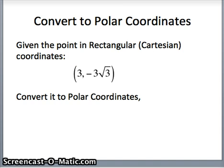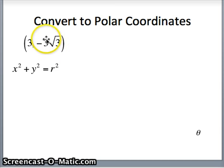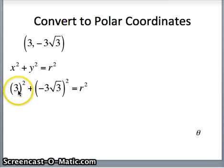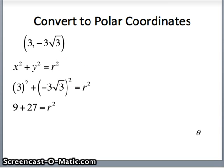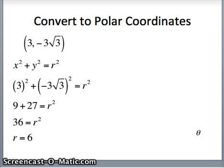Let's look at an example. I am given the point 3 on x, negative 3 root 3 on y. Visualizing this, 3 on x and negative 3 root 3 on y would put us in the fourth quadrant. We want to convert that to polar coordinates. We know x squared plus y squared is r squared. x is 3, so 3 squared is 9. Negative 3 root 3 squared: a negative number squared gives us a positive number, 3 squared is 9, root 3 squared is 3, so 9 times 3 is 27. So 9 plus 27 is r squared — 36 is r squared, and r will be 6. The distance from the origin to that point will be positive, will be 6.